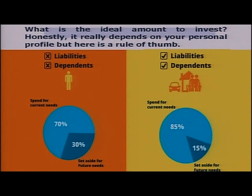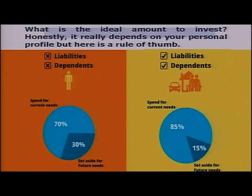What is the ideal amount to invest? It depends on your personal profile, but here is a thumb rule. Initially, when there are no liabilities and no dependents — say a person has just started his career — after meeting current spending needs like rent, car, fuel, and food, he should ideally spend 70% of his salary and save about 30% for future needs. Once he has a family, liabilities, and dependents, he should spend around 85% for current needs and set aside at least 15% for future needs.